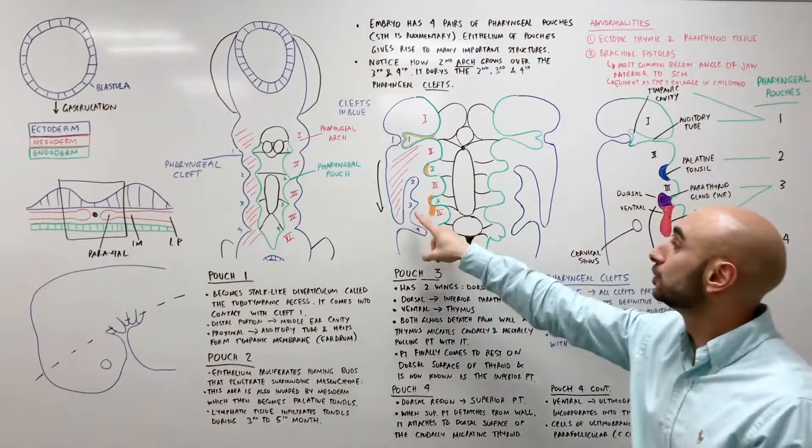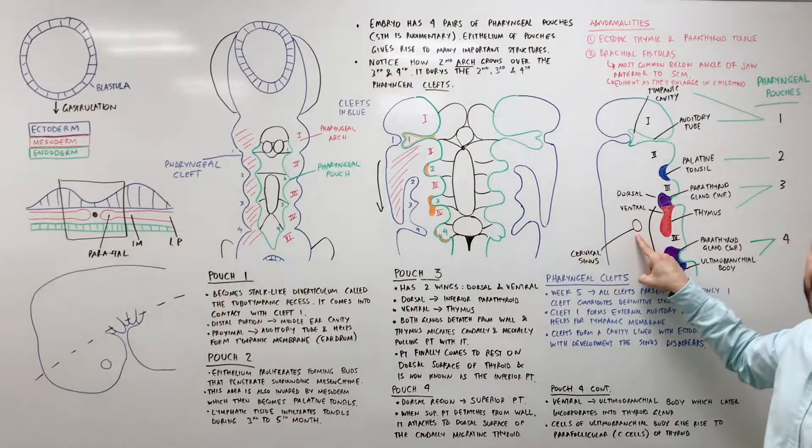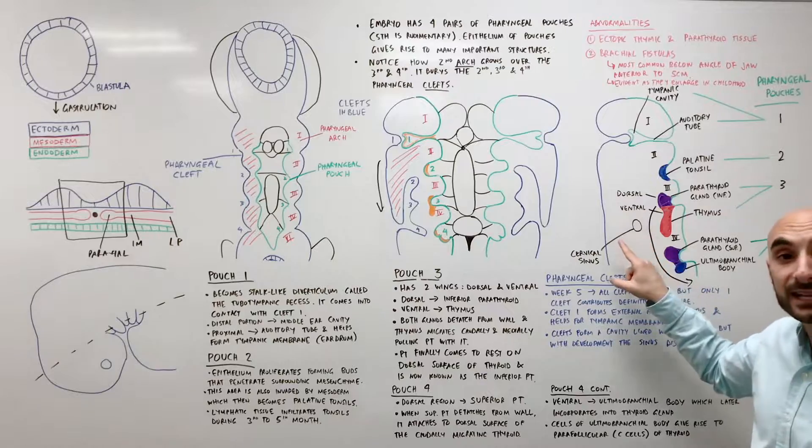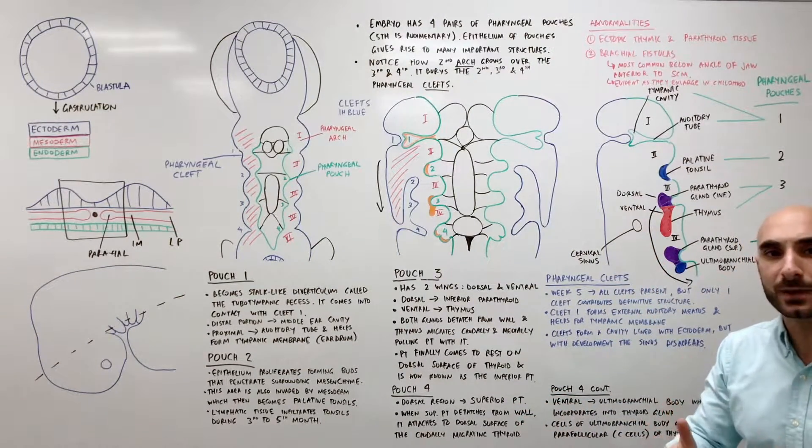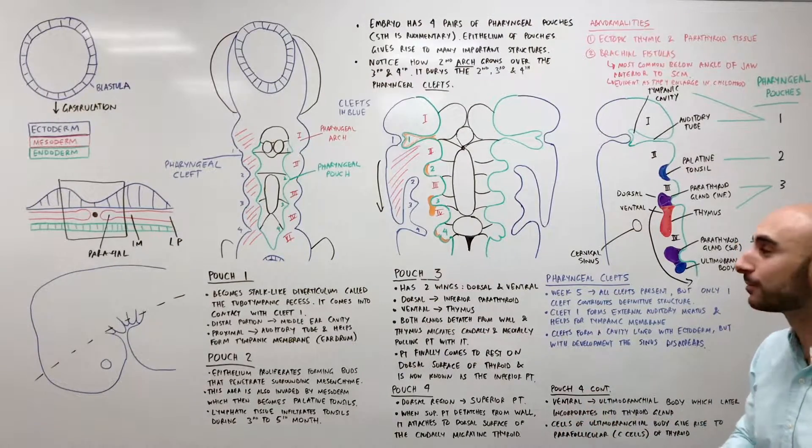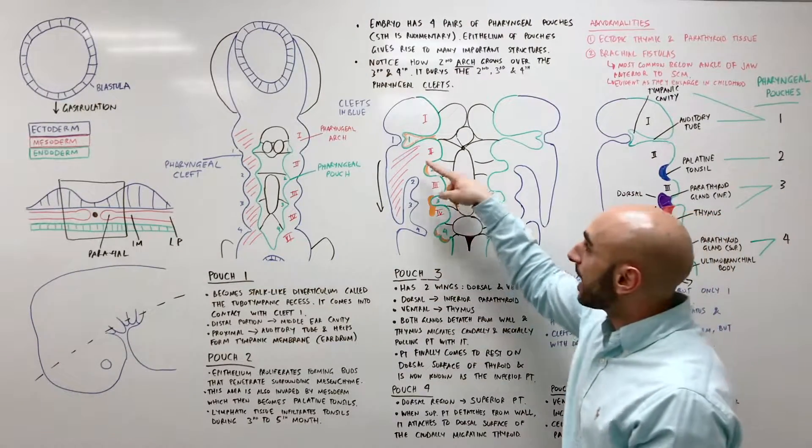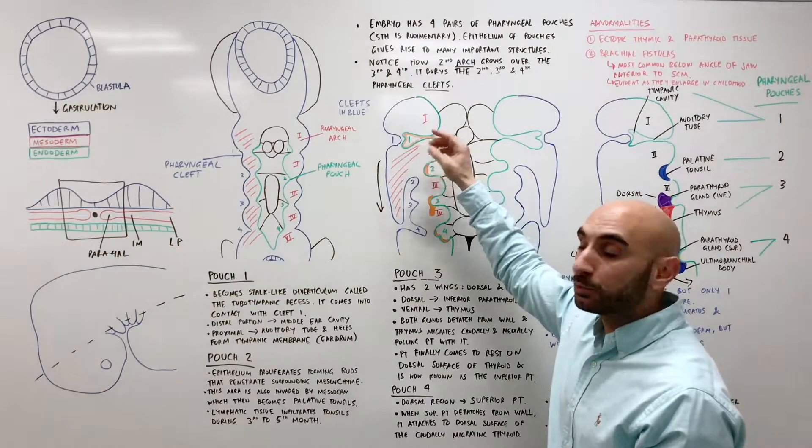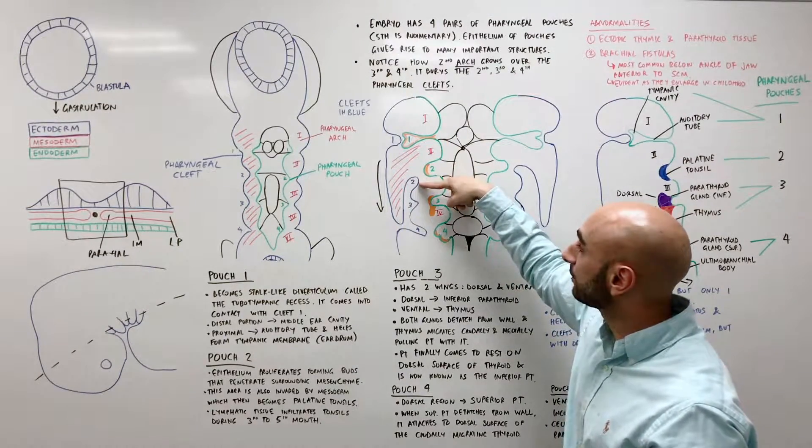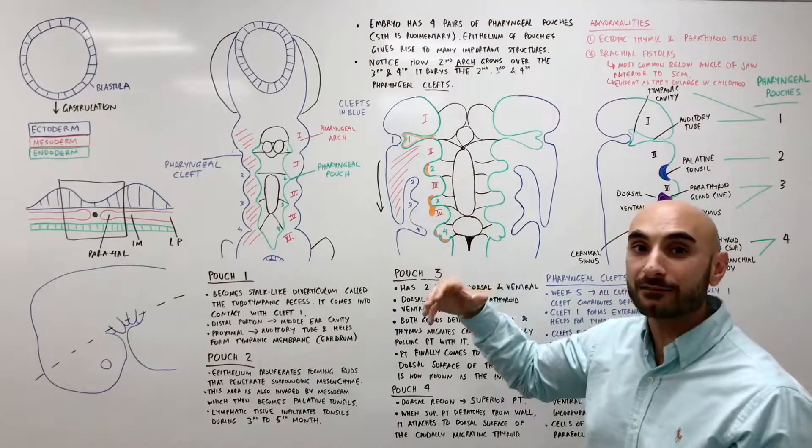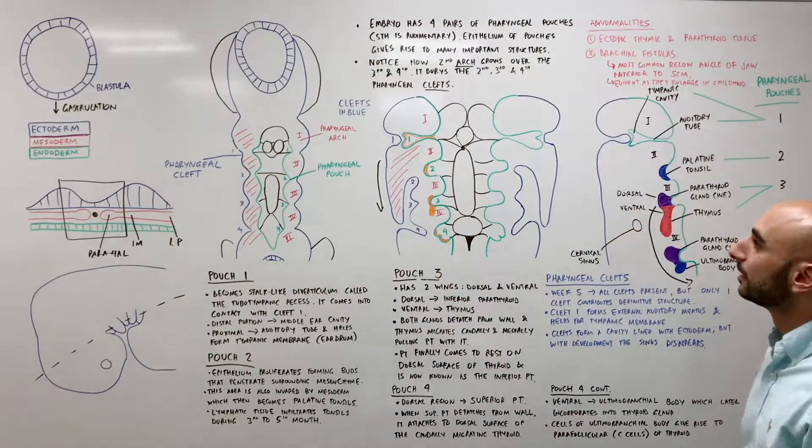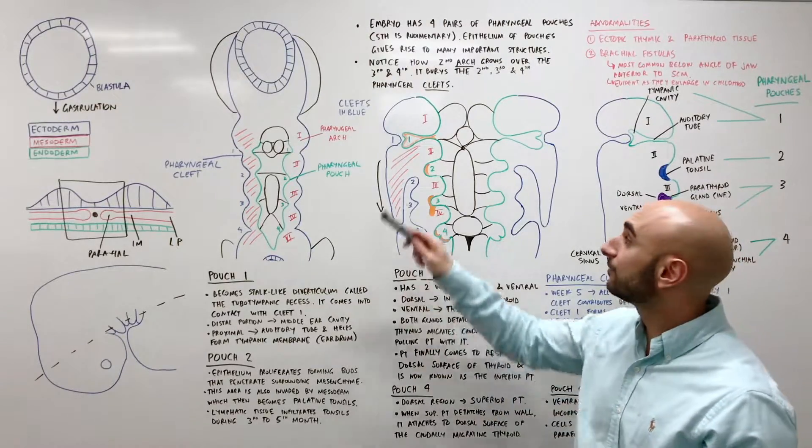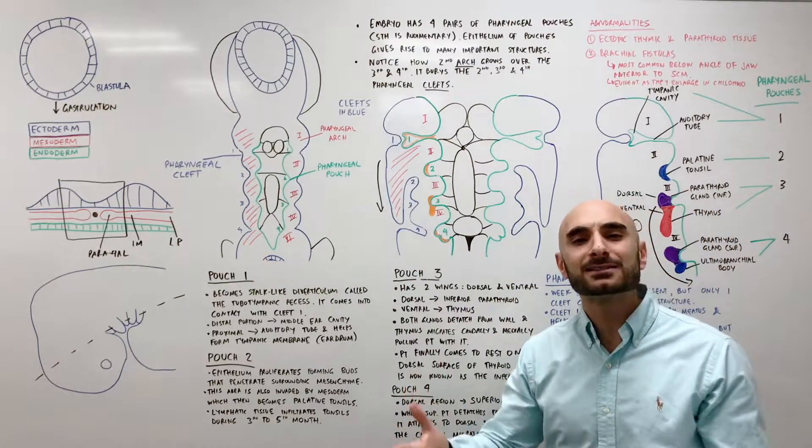Initially, you might have a cervical sinus remaining, but that, again, will not be present at birth. It won't be present in a normal situation in you, sitting where you are watching this video. Again, what happens, 2nd pharyngeal arch proliferates, covers the 2nd, 3rd and 4th pharyngeal clefts, obliterating them eventually. And so, that's why we only have the 1st pharyngeal cleft becoming something.